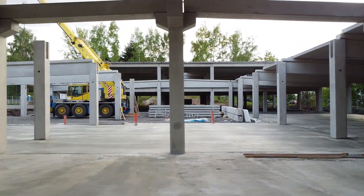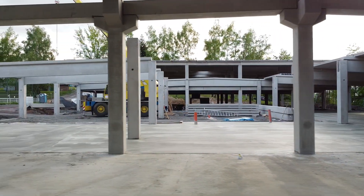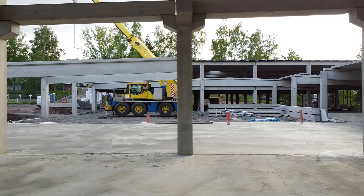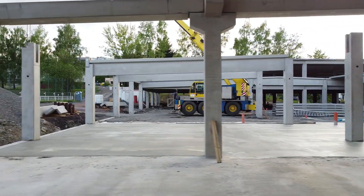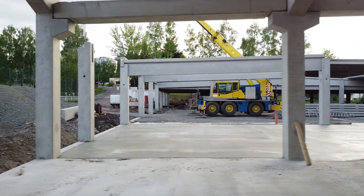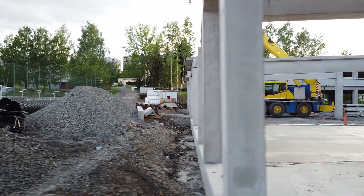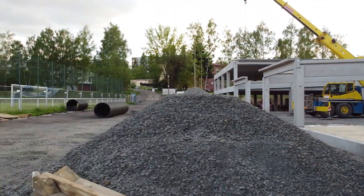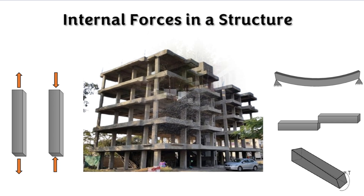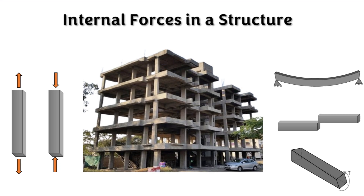When an external load is applied on the structure, it starts to disturb the equilibrium of the structure. To maintain the equilibrium, the structure has to resist the external forces. This resistance is achieved by the development of internal forces within the structure. Let's discuss what internal forces are developed in a structure.